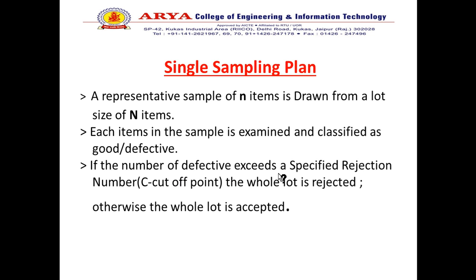If the number of defectives exceeds a specific rejection number — that is, C, the cutoff point — the whole lot is rejected. Otherwise, the lot is in acceptable condition.